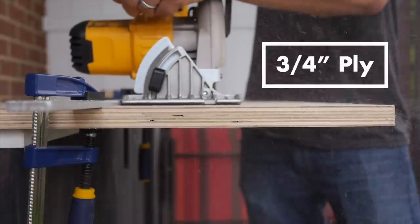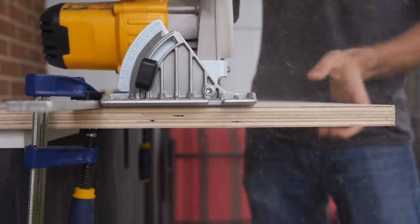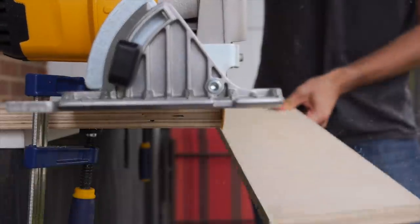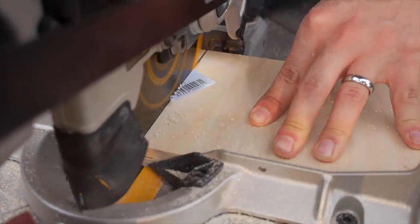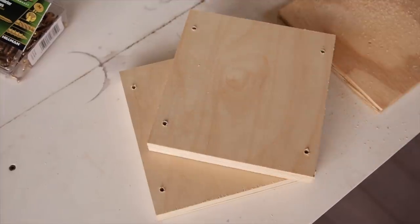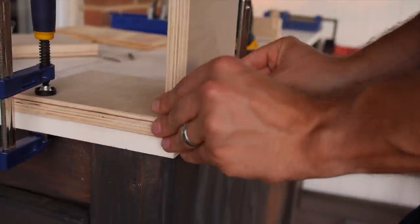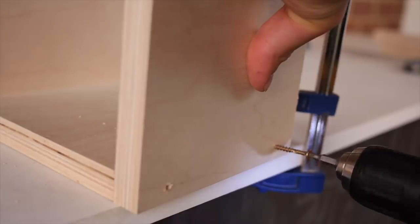With the inner box complete, I moved on to the outer box, which is made from three quarter inch plywood. After ripping and cutting the side pieces, I was able to simply screw the outer box together and basically just get everything all lined up.